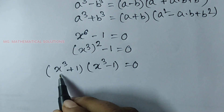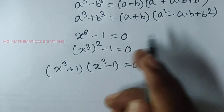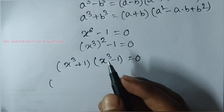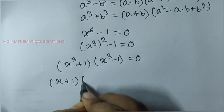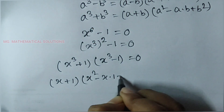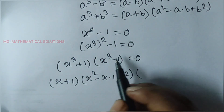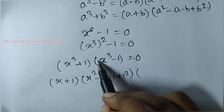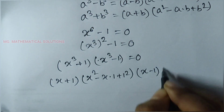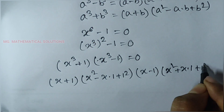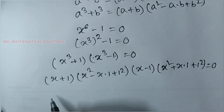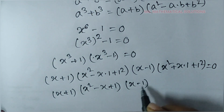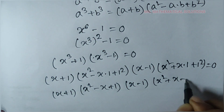Now, this term looks like the sum of cubes formula, so we use a³ + b³ with a equal to x and b equal to 1: (x+1)(x² - x + 1). And x³ - 1 uses the difference of cubes formula with a equal to x and b equal to 1: (x-1)(x² + x + 1) equal to 0. So we have (x+1)(x² - x + 1)(x-1)(x² + x + 1) equal to 0.